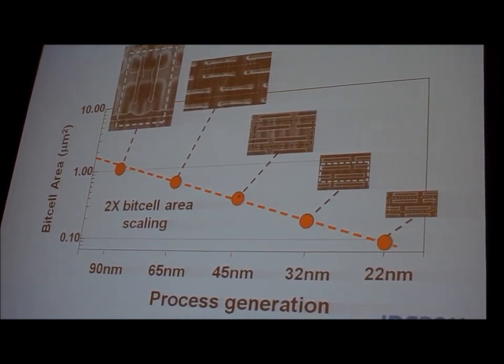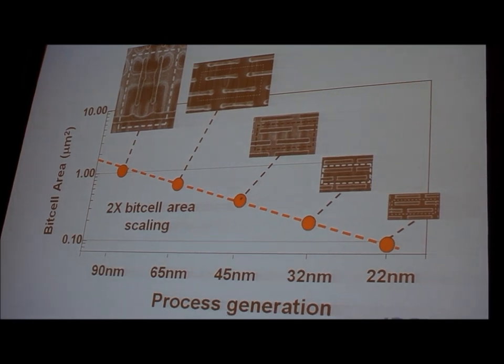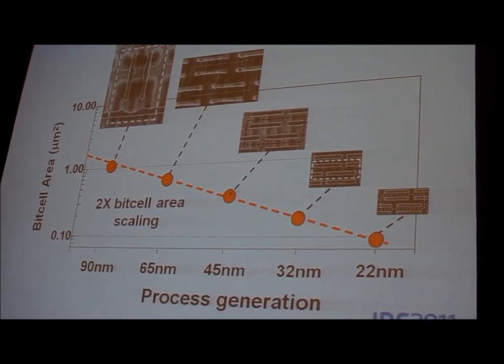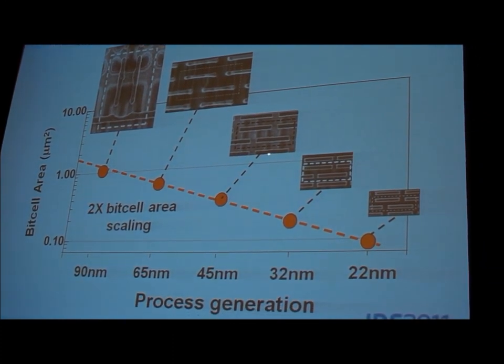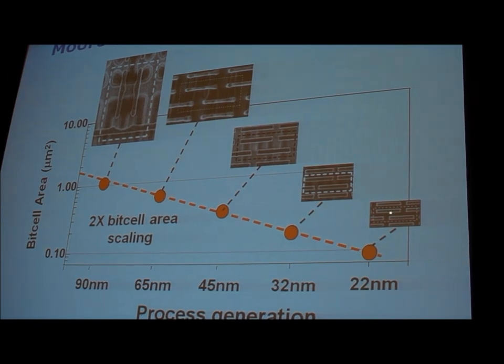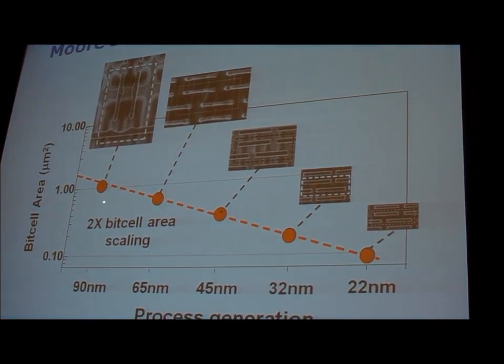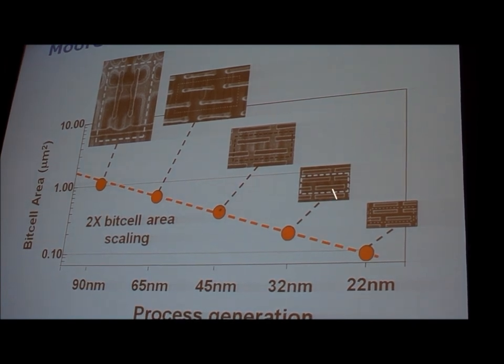Back to demystifying Moore's Law: what is Moore's Law really? Moore's Law, other than a t-shirt, is being able to decrease the area of a circuit by a factor of two every generation — fundamentally a cost reduction. Here for the past five generations you can see the SRAM: the tall bit cell, the wide bit cell, a wide bit with double patterning, a better wide bit with double patterning, and then the 22-nanometer generation with the 3D device — showing the 2X decrease in bit cell area every generation.